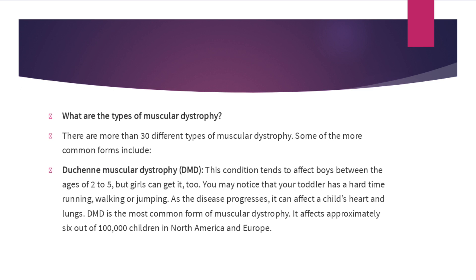There are many different types of muscular dystrophy — nearly 30 types. One of the more common forms is Duchenne muscular dystrophy, or DMD. This condition tends to affect boys between the ages of 2 to 5, but girls can get it too. You may notice that your toddler has a hard time running, walking, or jumping. As the disease progresses, it can affect the child's heart and lungs. DMD is the most common form, affecting approximately 6 out of 100,000 children in North America and Europe.